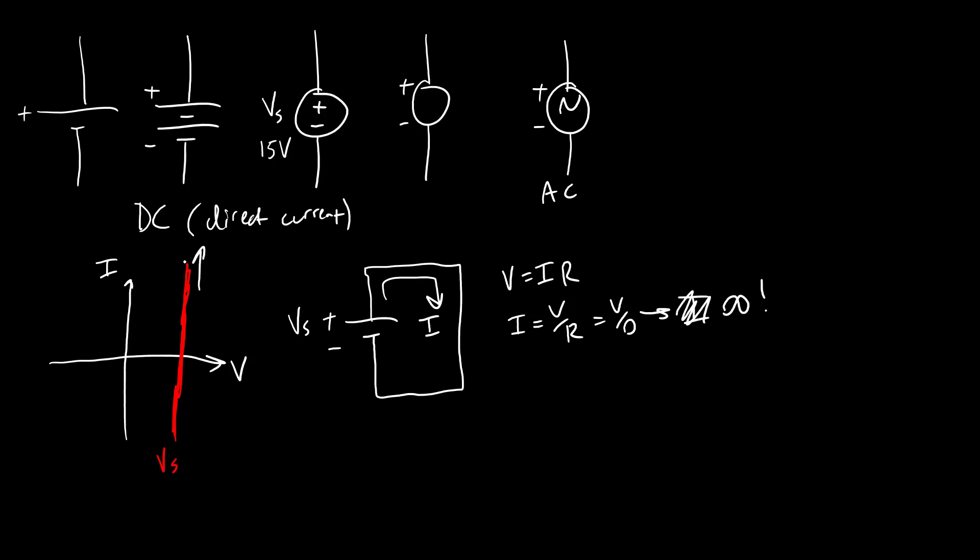Clearly that can't be the case in the real world. If you take a double A battery and short-circuit it to itself, you're not going to get infinite current out of a single double A battery. So there has to be something else going on there, or some oversimplification in this model that isn't accounting for the fact that you can't get infinite current out of a double A battery. What we're missing is the internal resistance of the battery.